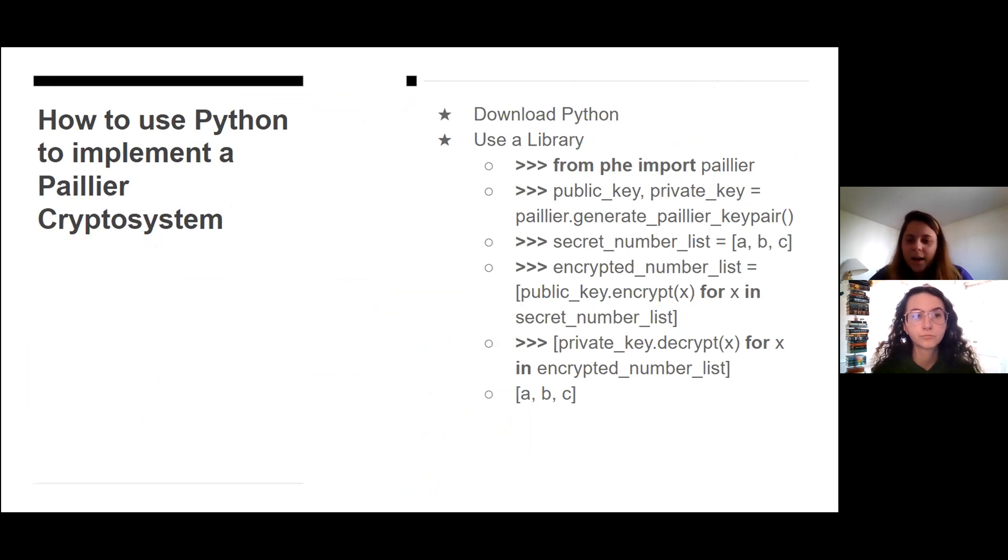The way I applied a Paillier Crypto system was with the help of Python. First, I installed a Python library that collects codes that can be used to encrypt or decrypt numbers or letters. Here's the library that I used. Furthermore, I generated a private key with a list of the ABCs and then encrypted the secret list. With this, I can only decrypt the ABCs with my own private key.